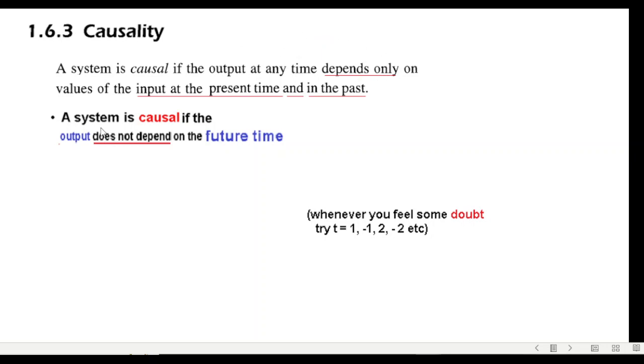Or another way we can say that a system is causal if the output does not depend on the future time. We will primarily be using this definition.